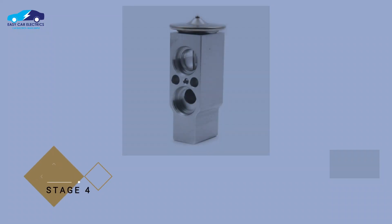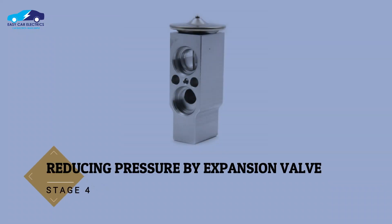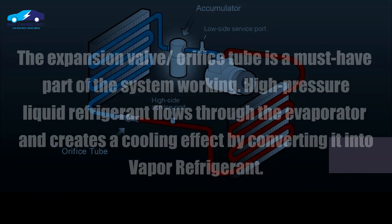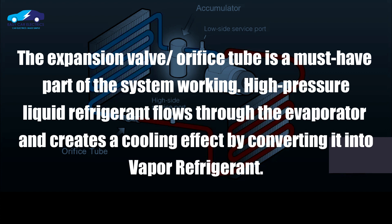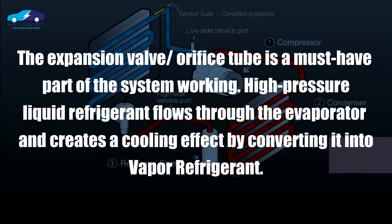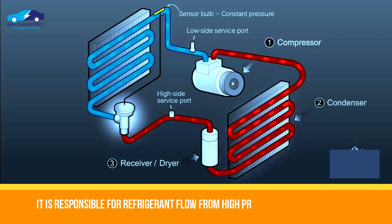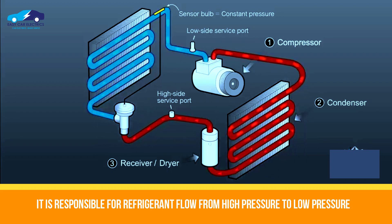Stage 4: Reducing pressure by expansion valve. The expansion valve or orifice tube is a must-have part of the system. High-pressure liquid refrigerant flows through the evaporator and creates a cooling effect by converting it into vapor refrigerant. It is responsible for refrigerant flow from the high-pressure to the low-pressure side.